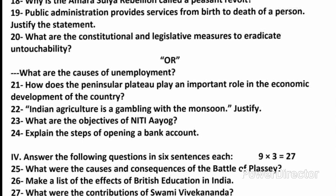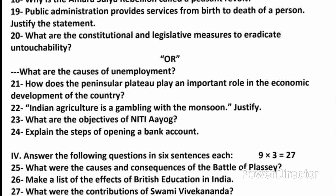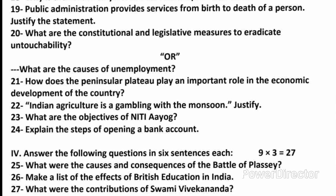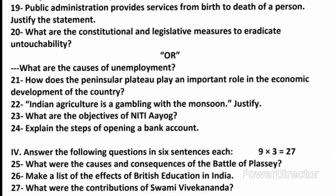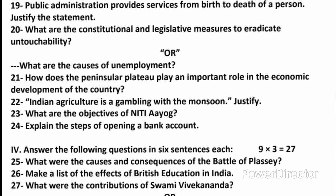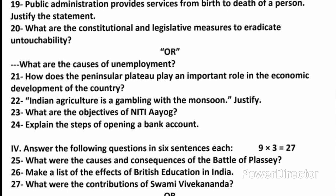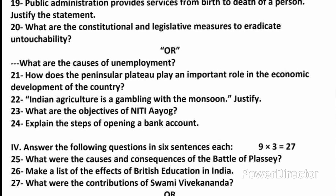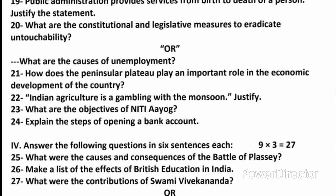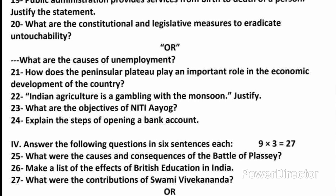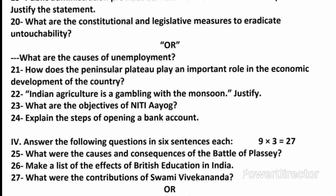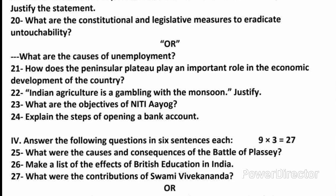Question 20: What are the constitutional and legislative measures to eradicate untouchability? Answer: Article 17 prohibits the practice of untouchability. Untouchability Offenses Act 1955, Protection of Civil Rights Act 1976, universal suffrage is given to all, reservation in education and jobs 1989. Abolition of untouchability is the responsibility of the respective states.